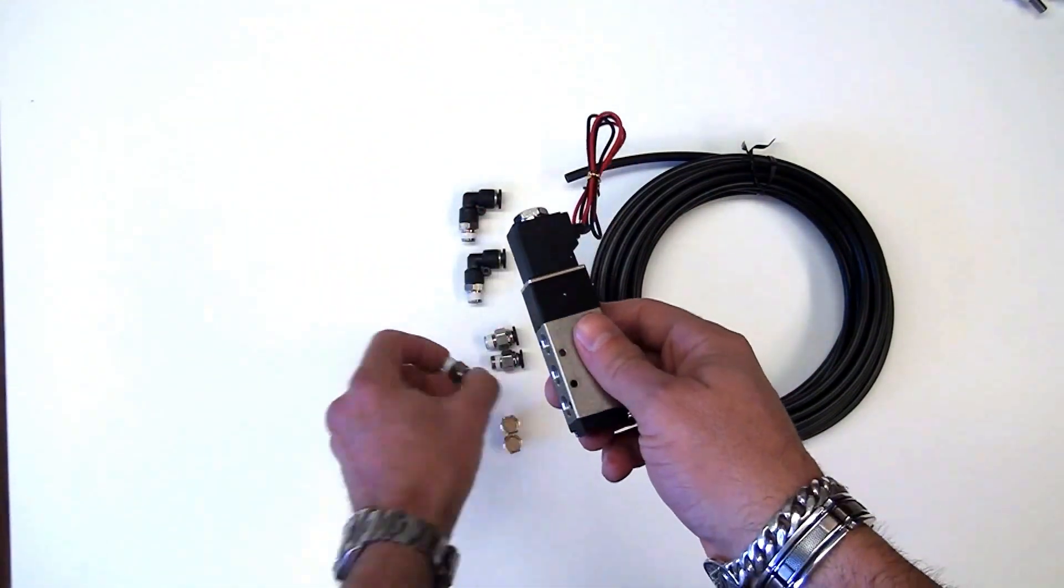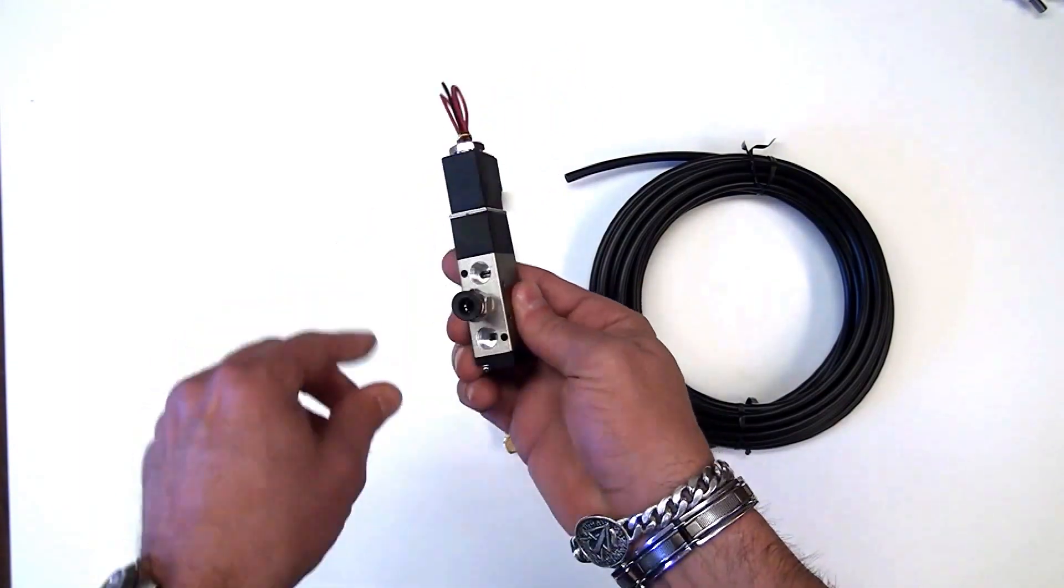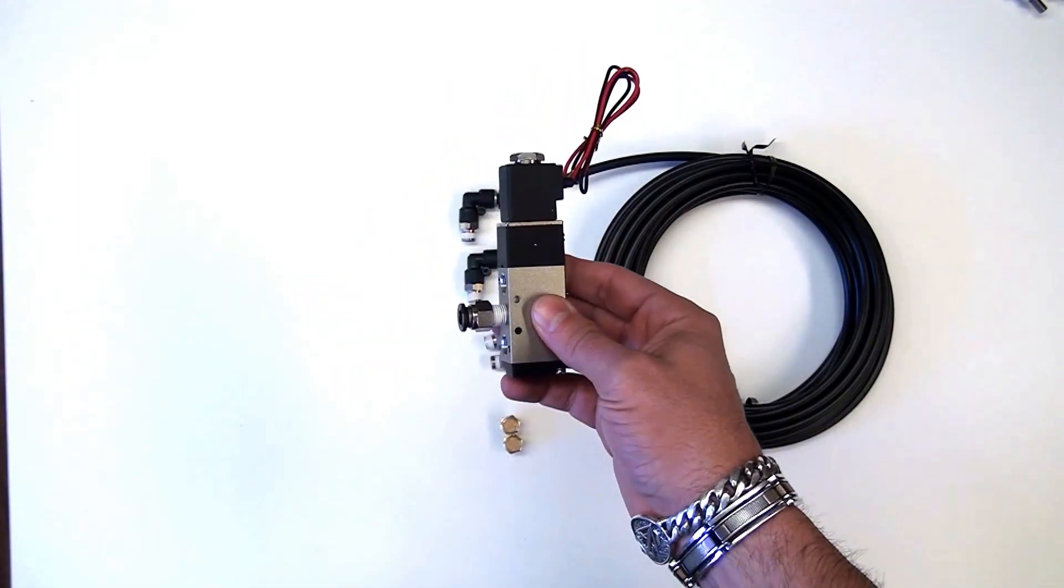To use the kit, you'll take one of the male push-on fittings and put it into this center port here where your air will come in from your compressor.